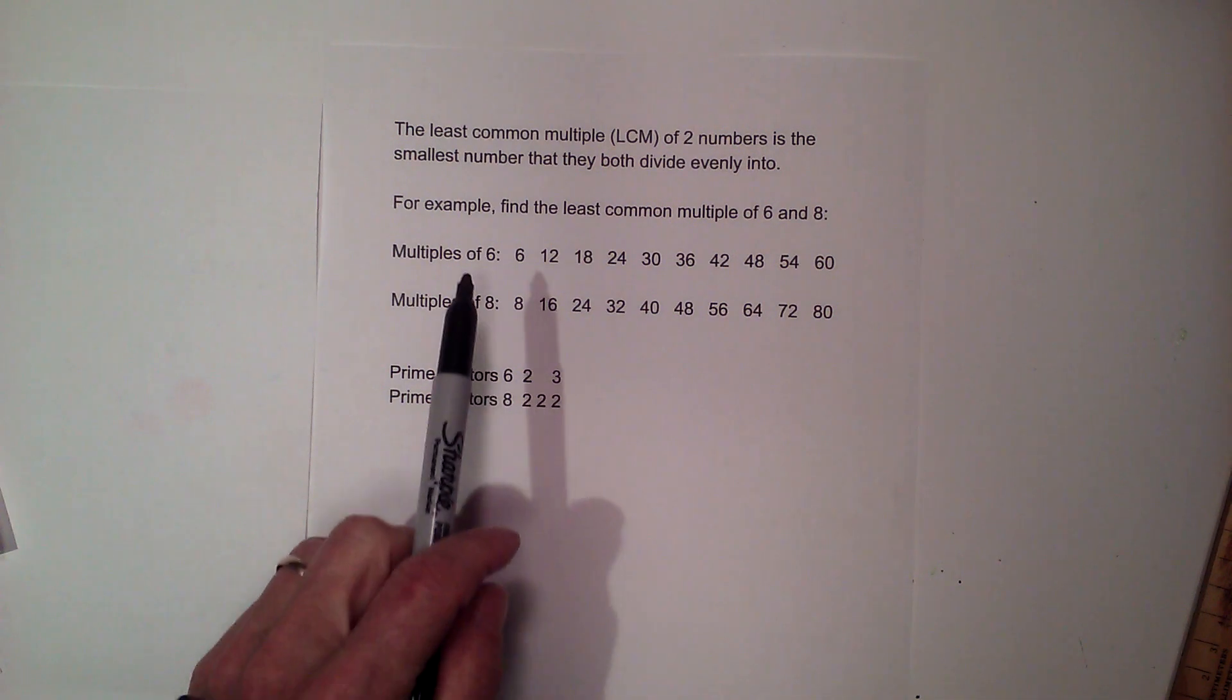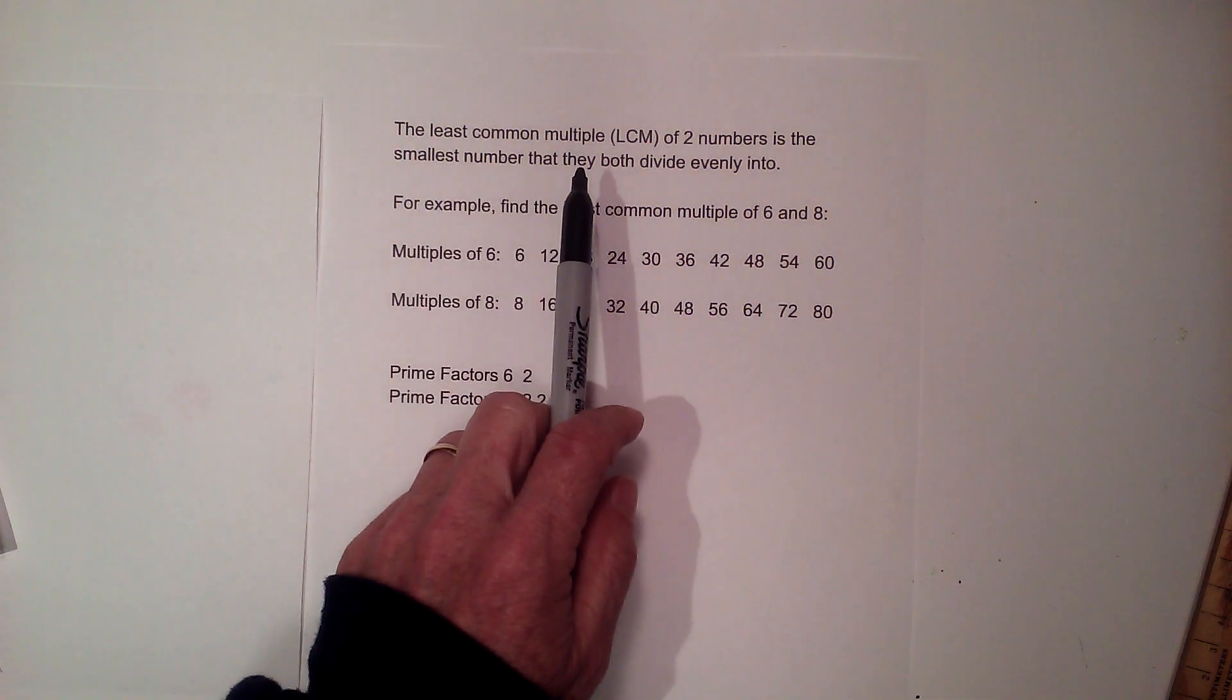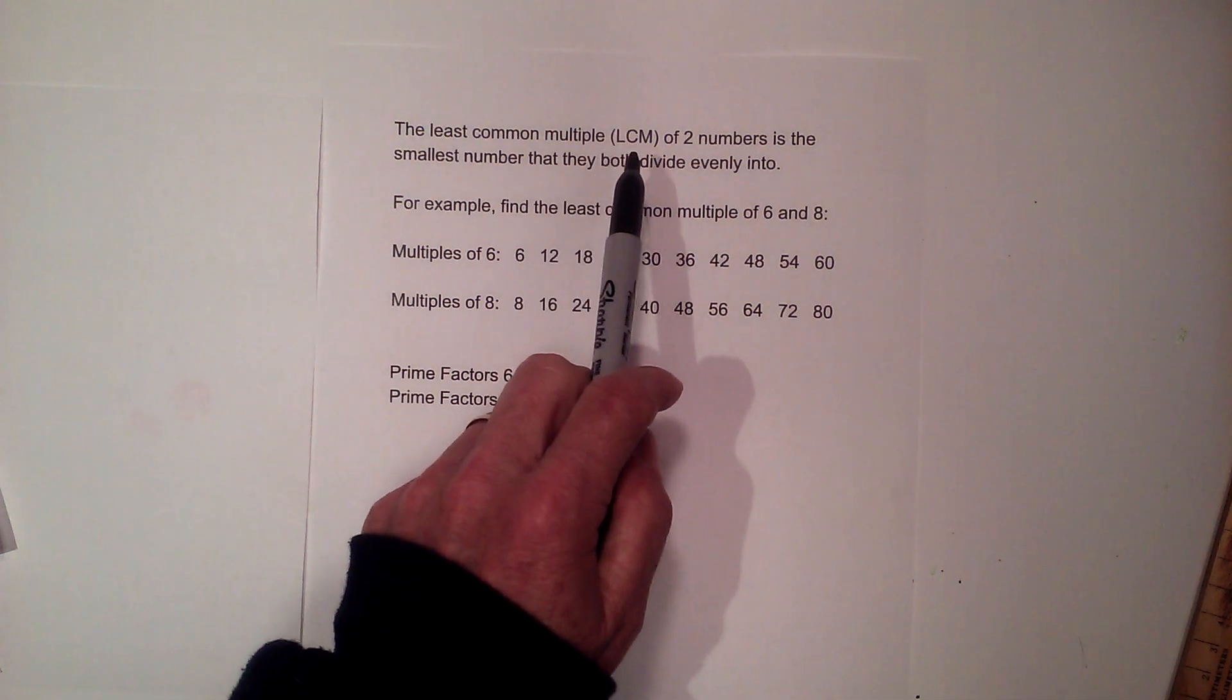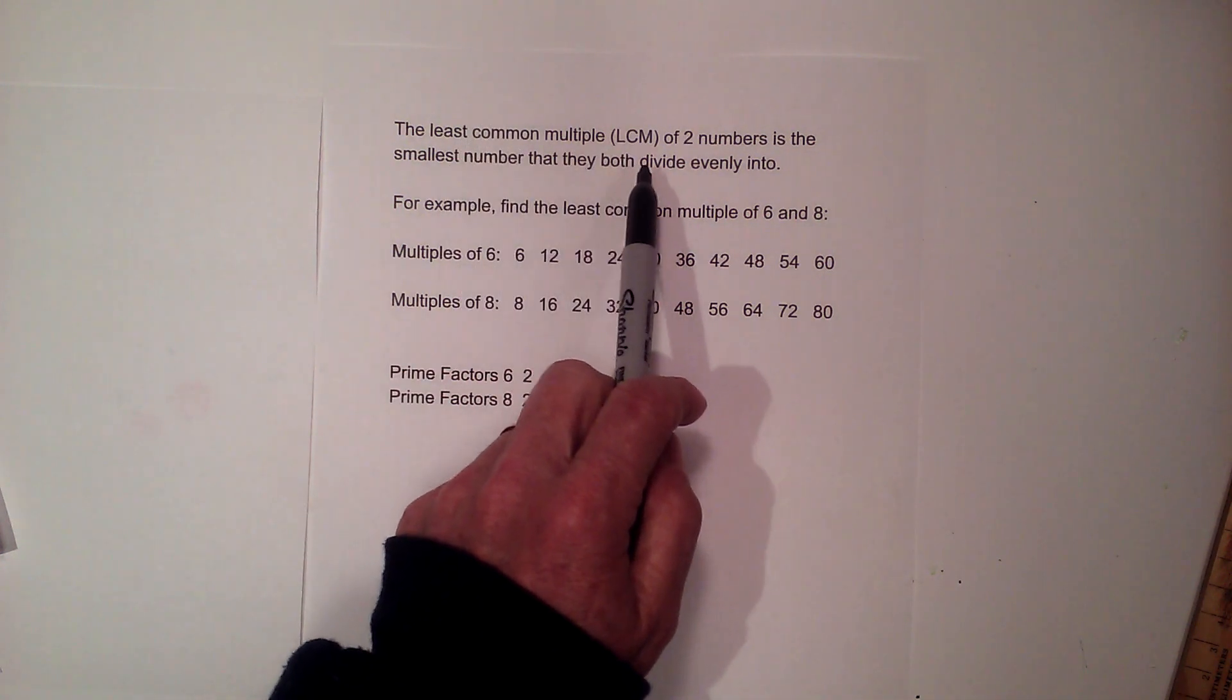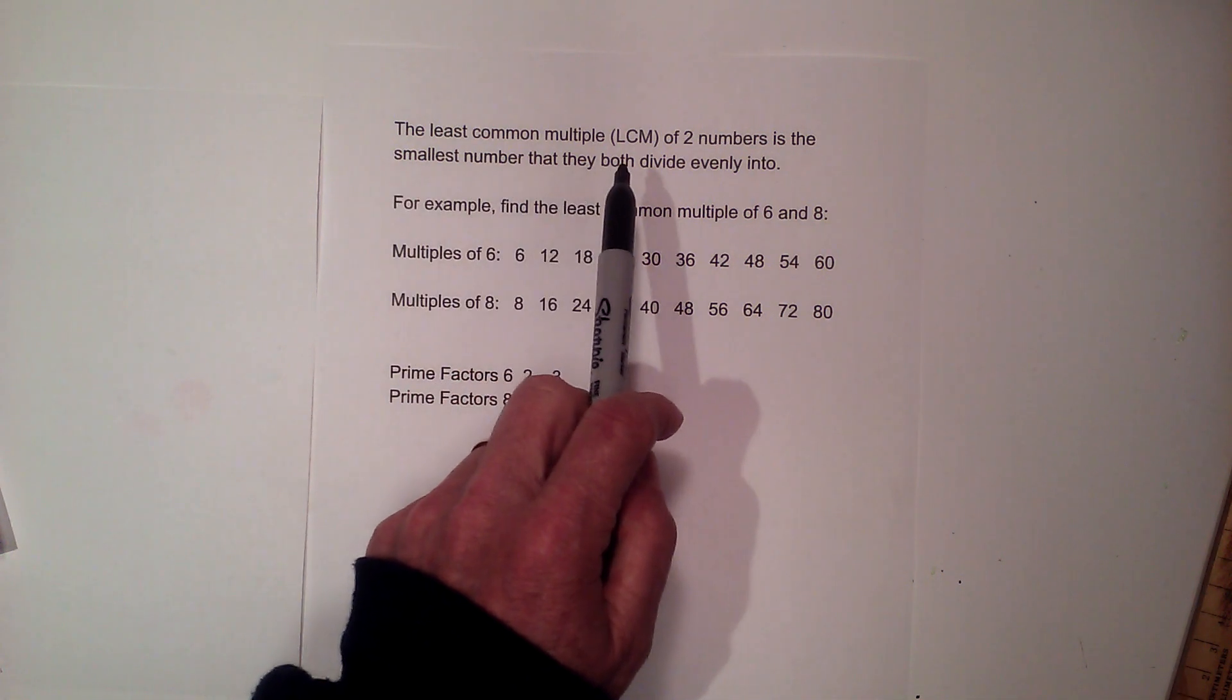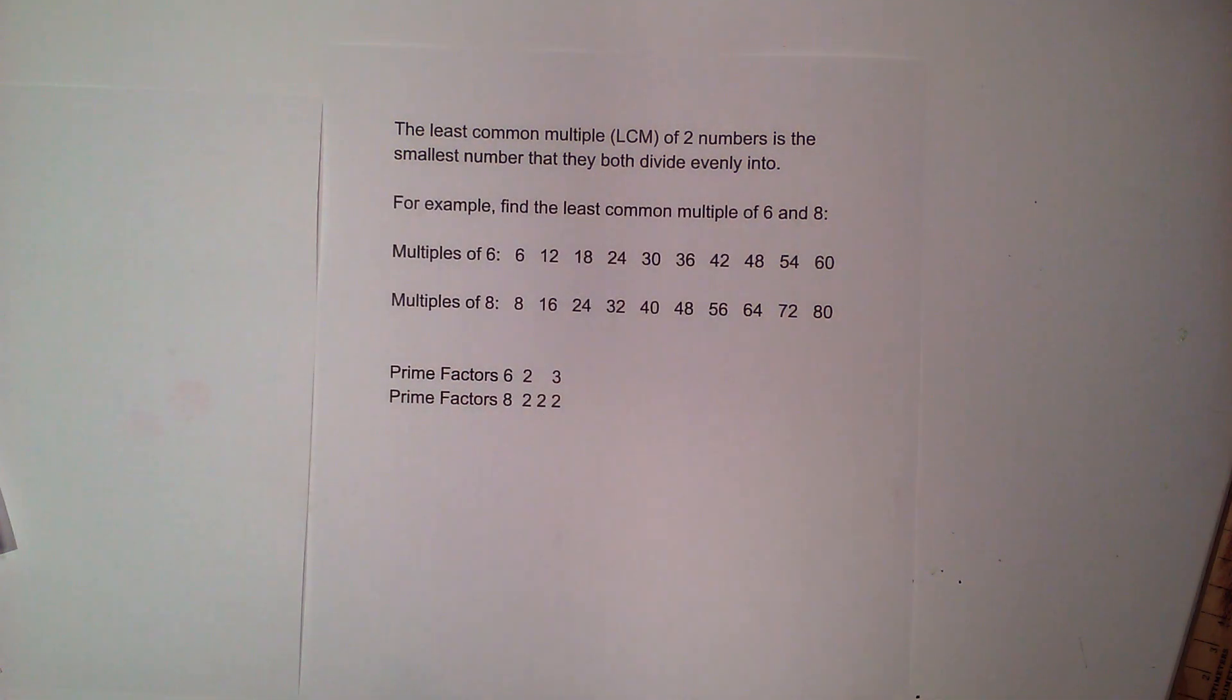In this video, let's go over how to find the least common multiple of two numbers. I'm going to show two different techniques, and then you can evaluate which one you like the best. Remember, the LCM, or the least or lowest common multiple of two numbers, is the smallest number that they both divide evenly into.